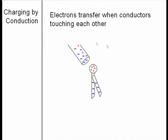So here's my animation. When we hold the negative charge rod near the electroscope, the free electrons are repelled down into the bottom.